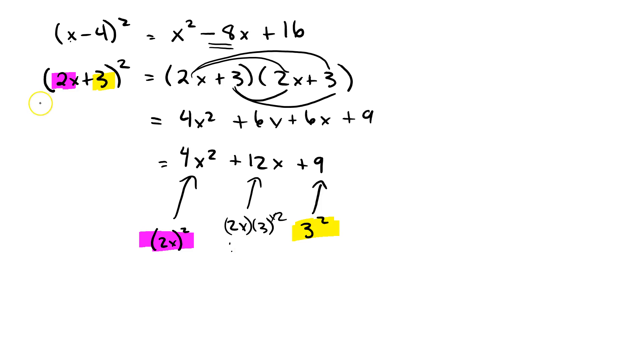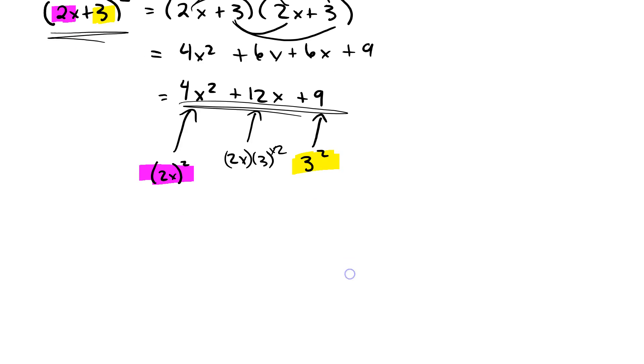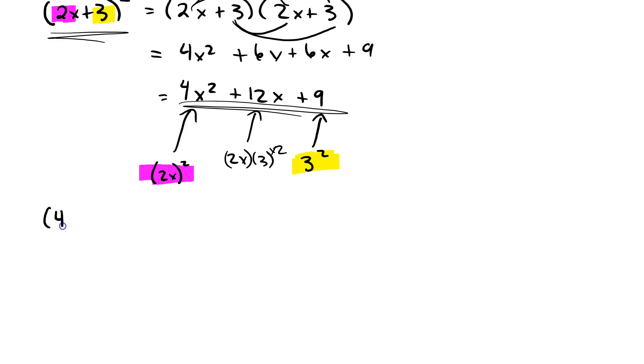Without expanding out, (4x-1)² gives us: the first term squared is 16x², the constant is (-1)² which is +1, and the middle term is 4x times -1 times 2, which is -8x. So the answer is 16x² - 8x + 1.